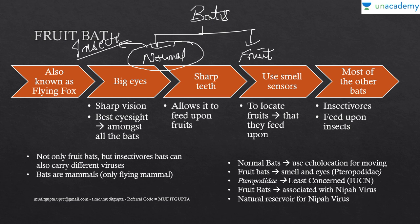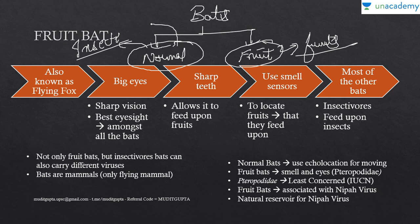The normal bat is insectivorous in nature and it uses echolocation.